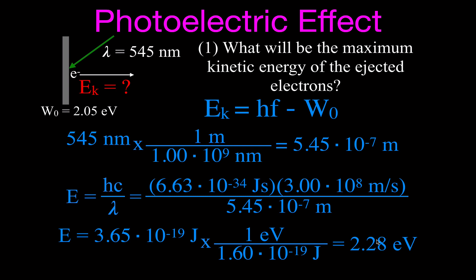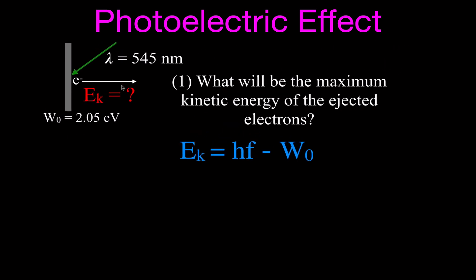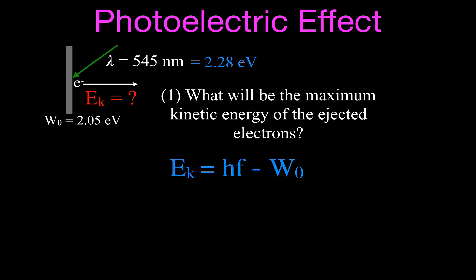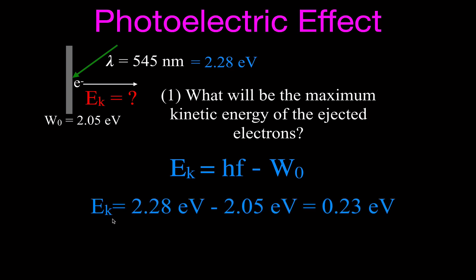The incoming light has 2.28 electron volts of energy, and the work function is only 2.05, so there's energy left over — and that's what the electrons carry away. The kinetic energy equals 2.28 minus 2.05, which gives us 0.23 electron volts. That is the maximum kinetic energy of the electrons ejected from the metal plate.